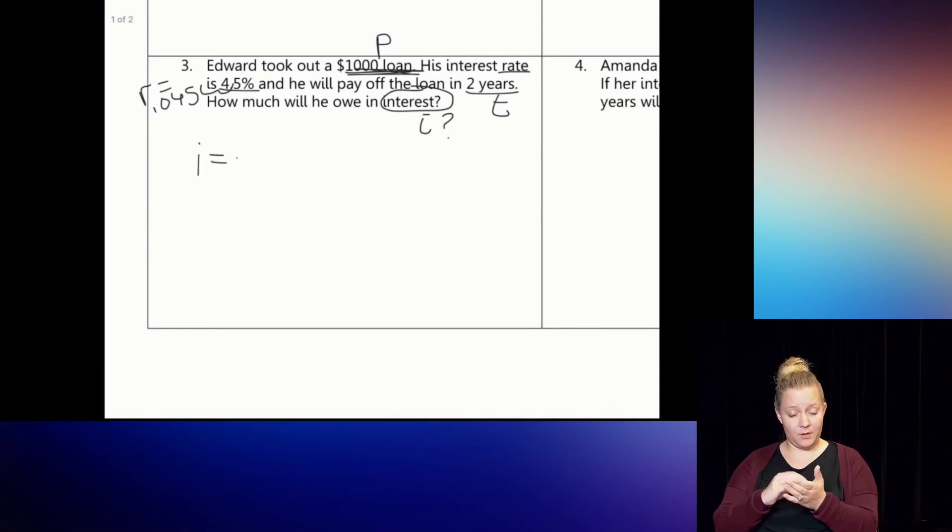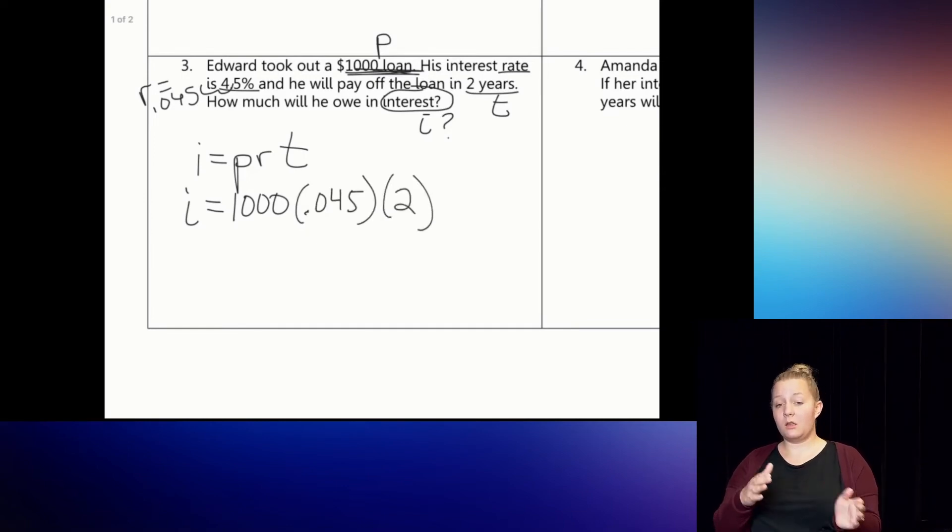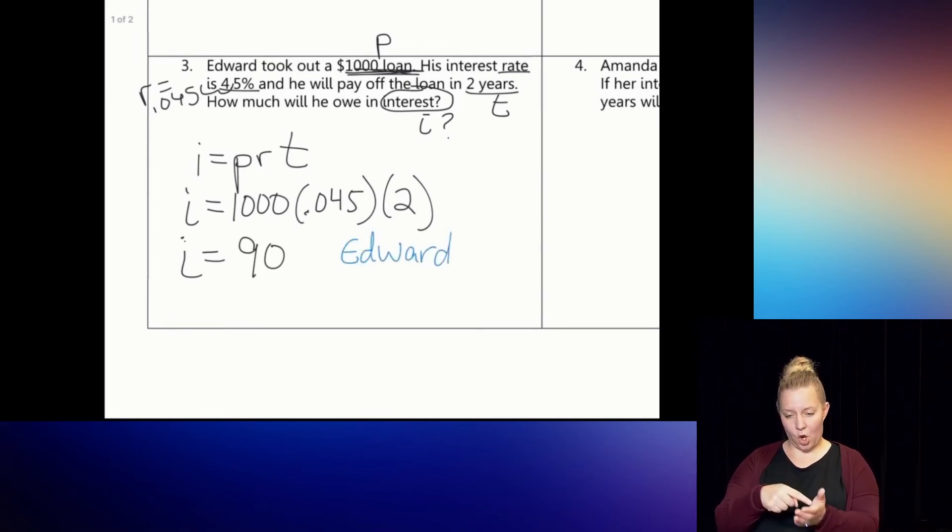If I write down my formula, that shows me that it's the beginning part before the equal sign that's going to have to stay a variable this time. The I, I don't know. The principal I can show is 1,000 times the rate of 0.045, because I'm using decimal form, times the time of 2. Well, look at that. This time we have three numbers being multiplied together. We have the variable already by itself, so we're not going to have to divide on both sides. So then if I do 1,000 times 0.045 times 2, then I see on my calculator I get 90. So to write my sentence, Edward owes $90 in interest.